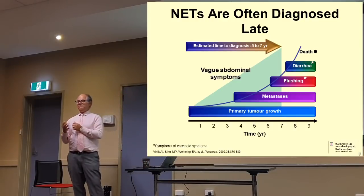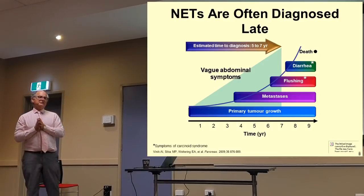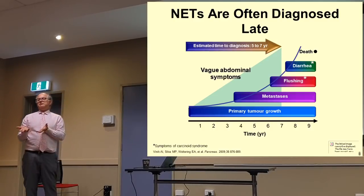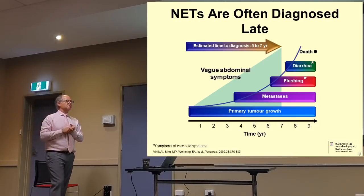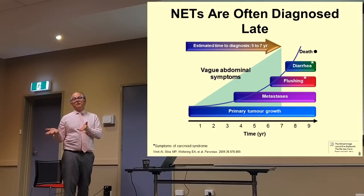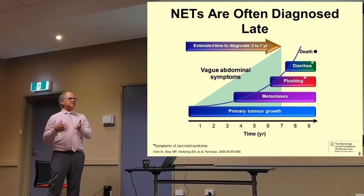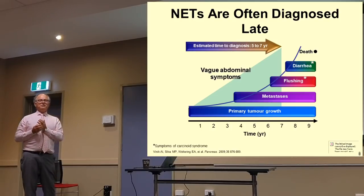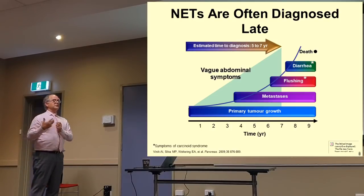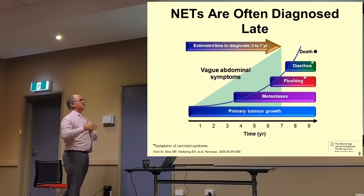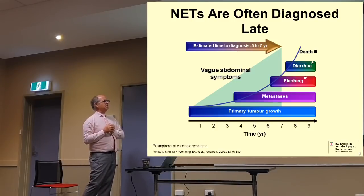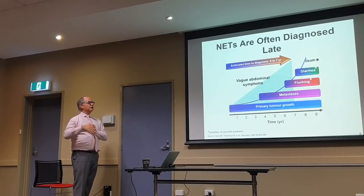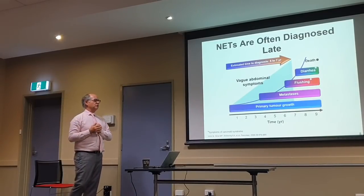They're often diagnosed late. Some patients complain of symptoms for five to seven years — rumbling diarrhoea diagnosed as inflammatory bowel disease, irritable bowel syndrome, flushing thought to be postmenopausal, or rashes ongoing for many years. They can present for a prolonged period of time and patients often see multiple specialists before a diagnosis is made. During that time, we see that patients will develop metastases and become symptomatic from their disease or from the hormones it causes.